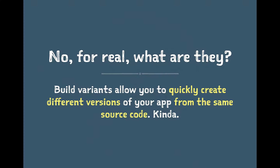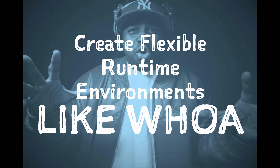Someone might ask: why would I want a different build variant? You may have one application that works a particular way when released on the Google Play Store, but works completely differently due to limitations of another app store such as the Amazon App Store. You may need Google Play services for Google Play but those same services aren't available on other stores, so you'd need to strip that functionality. Rather than scattering if-statements throughout your code, you can use build variants to create different composable pieces of your application.